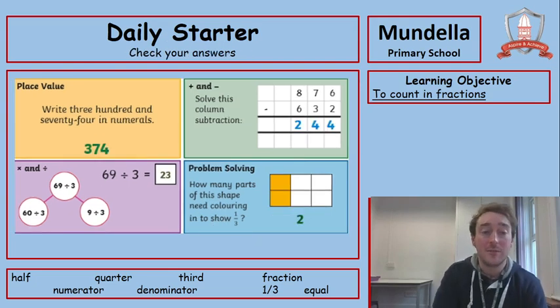Write 374 in numerals. There they are. 3, 7, 4. Perfect. 374.